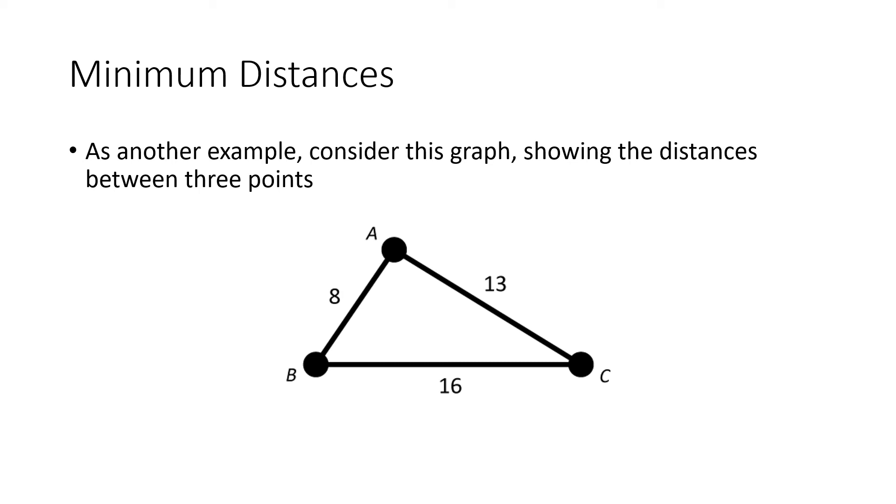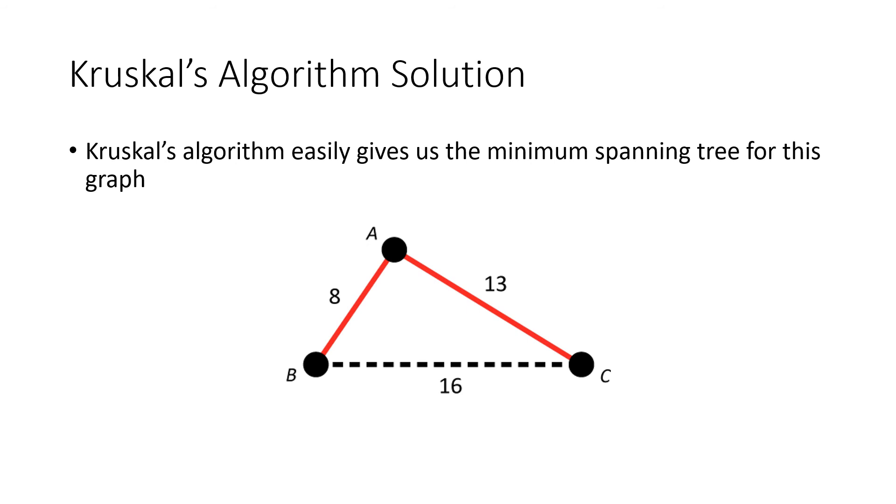Now let's talk about real world considerations. If we had three points with distances 8, 13, and 16 between them, Kruskal's algorithm would use the 8 and the 13, the cheaper edges. We wouldn't need the 16 because I can get from B to C by going through A. That's the solution for the smallest network connecting those three points.